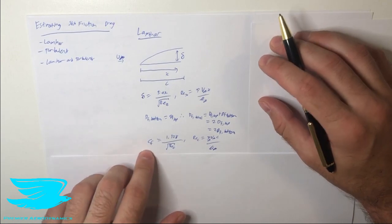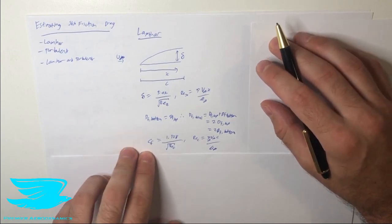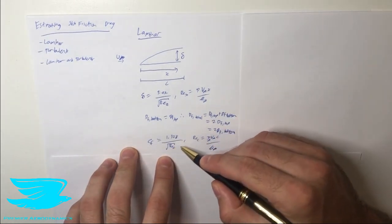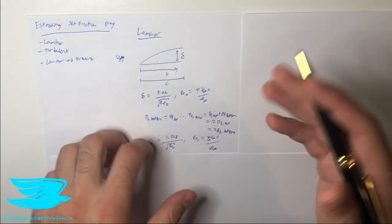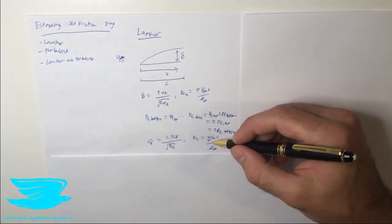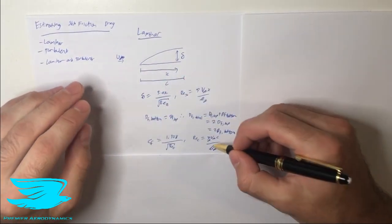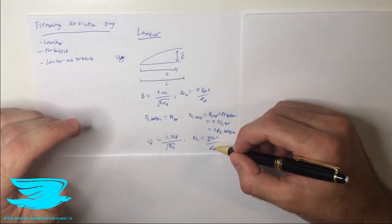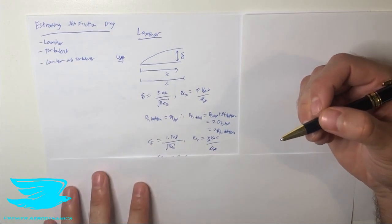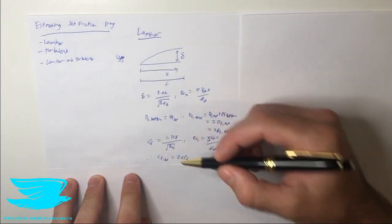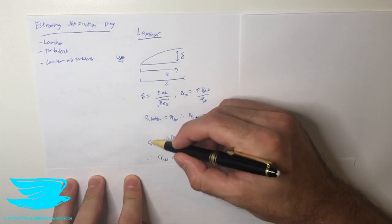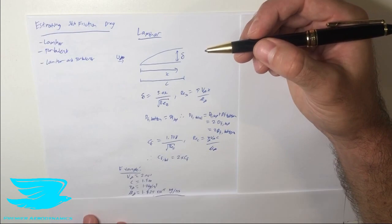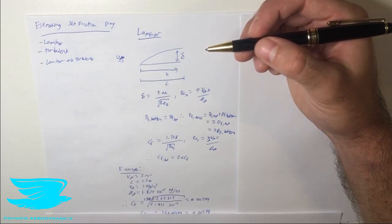We have an equation: the skin friction drag coefficient CF for a laminar boundary layer equals 1.328 divided by the square root of the Reynolds number of the flat plate. The Reynolds number based on the length C is the density times velocity times chord divided by the viscosity. For the total skin friction drag, it's just two times this CF, since it covers only one surface.